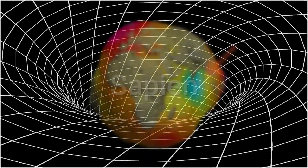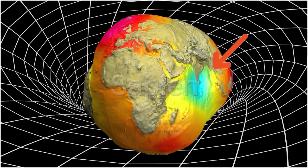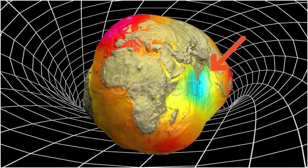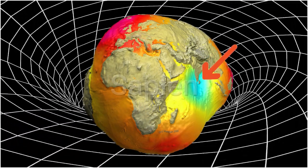If you could see the Earth's true shape, stripped of water and atmosphere, you'd notice a massive dimple in the Indian Ocean. That's our geoid low. But why should we care about this gravitational oddity?